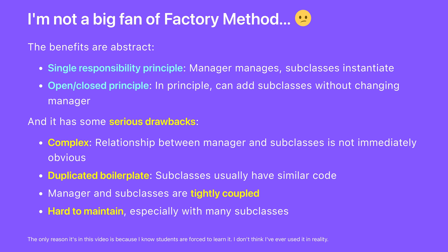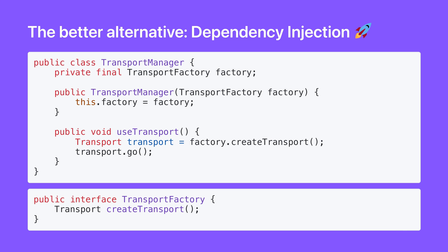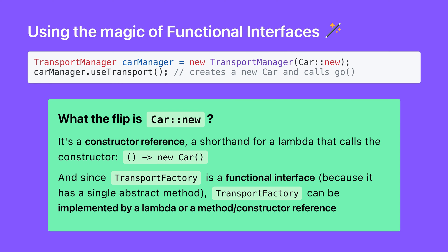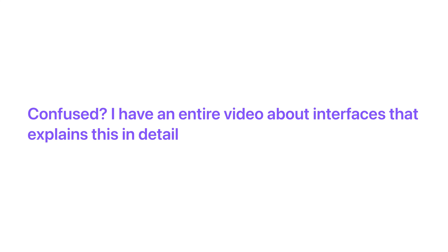But take a step back for a second — was that actually worth it? I'm not a big fan of factory method. I think the benefits are abstract and it has some serious drawbacks. The better alternative, in my opinion, is dependency injection. Make transport factory an interface, then we could inject an appropriate simple factory into the transport manager. But there's an even better way: using the magic of functional interfaces, we can implement transport factory with a constructor reference.